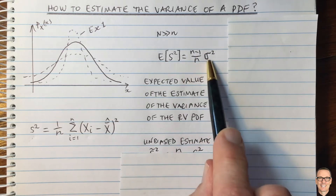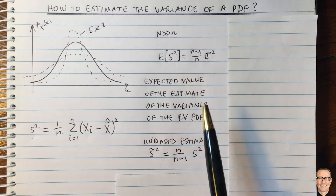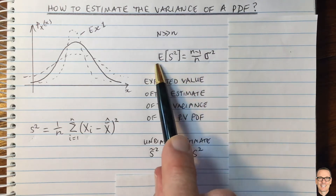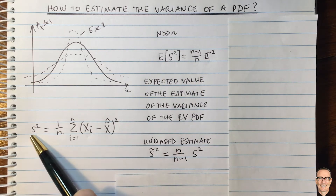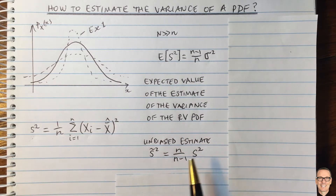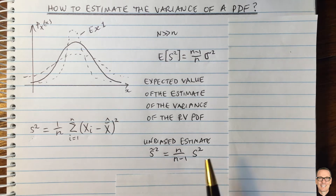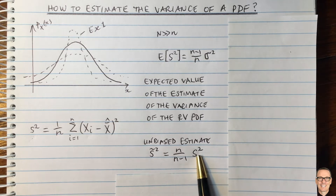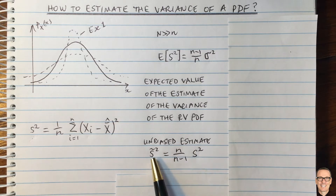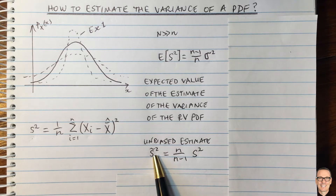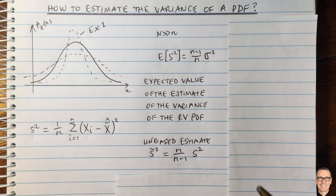Returning to the biased aspect: we can easily make this unbiased by taking these measurements, working out our value of s squared, and then simply normalizing it by n over n minus one. This becomes an unbiased estimate, so the expected value of s squared will equal the true value sigma squared. That's what it means to be unbiased.